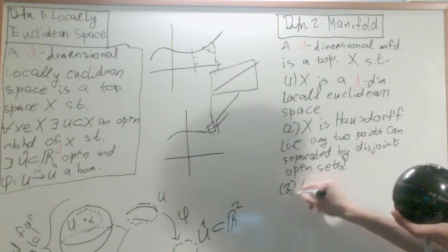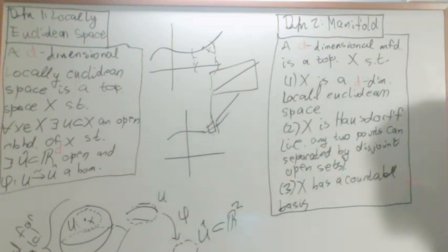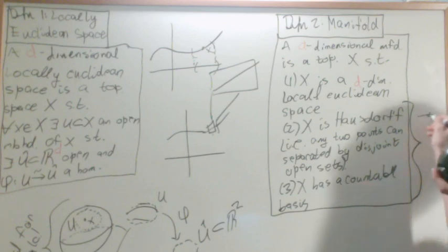Three is that X has a countable basis. So these are pretty simple definitions. These two conditions right here basically mean that it is metrizable, basically meaning it can be generated by a metric. It's just for that extra structure.